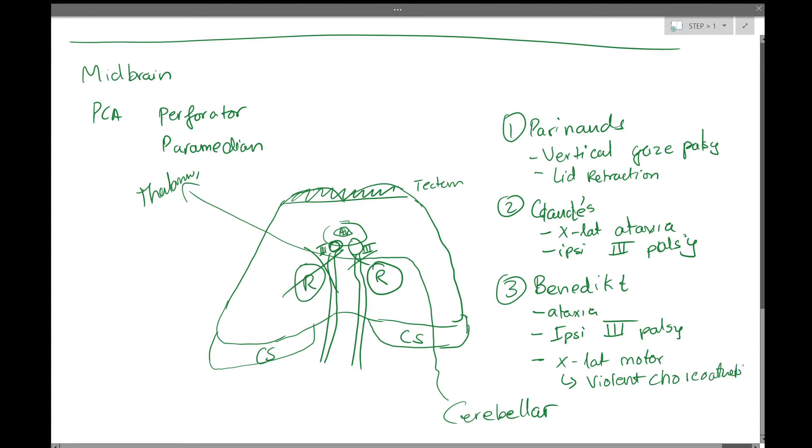And then the final one we're going to talk about is Weber. Now Weber syndrome is basically where the PCA is actually going to wrap around the midbrain like this. And it has these branches. So the paramedian branches are the ones that go here. These are the ones that are knocked out for Benedict.